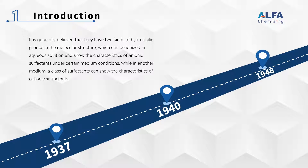It is generally believed that they have two kinds of hydrophilic groups in the molecular structure, which can be ionized in aqueous solution and show the characteristics of anionic surfactants under certain medium conditions, while in another medium, they can show the characteristics of cationic surfactants.